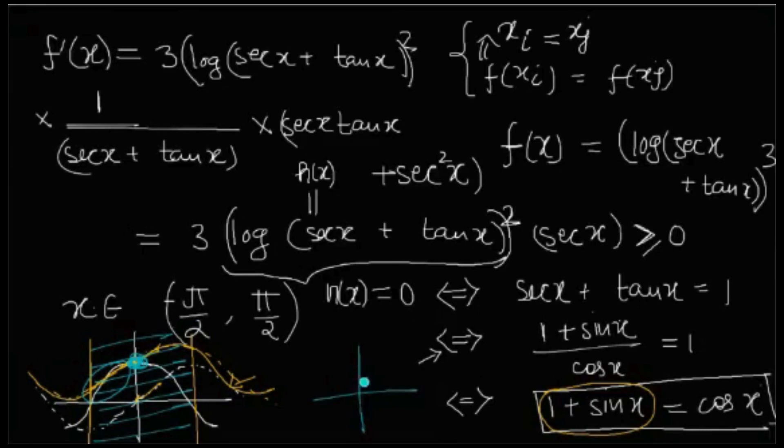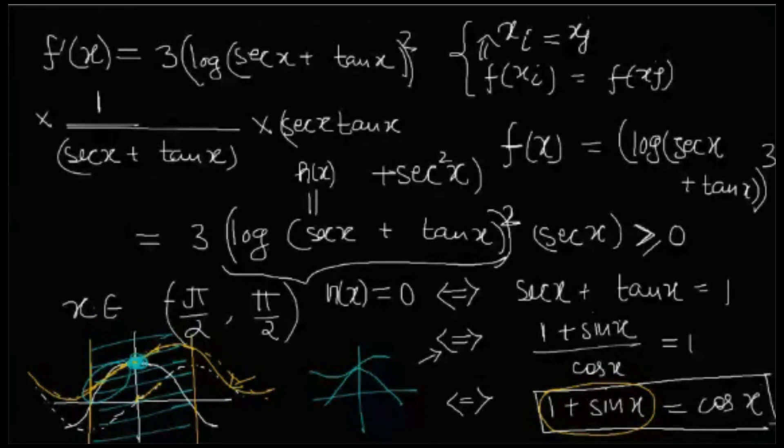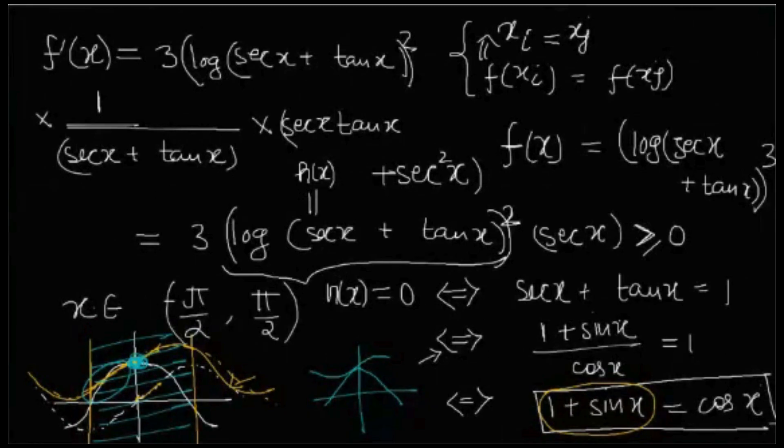I was just talking about the x equals zero area. It will still intersect, which means that between minus pi by 2 to pi by 2 at x equals zero, that log expression will become zero. Yes. Then it is not strictly increasing.